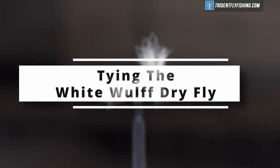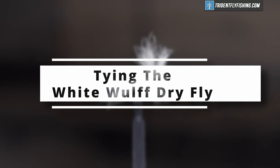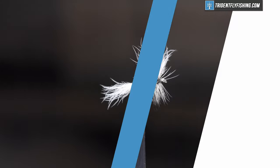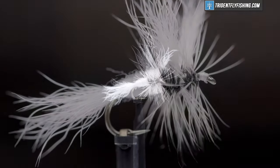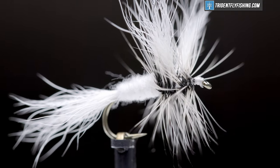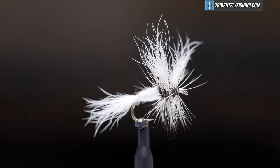Hello, I'm Carlit Trident, fly fishing. Today we're going to tie the White Wolf. This fly was designed by the legendary Lee Wolf in the 1930s. It's a great fast water fly that floats high and easily supports the dropper. It's usually tied in sizes 10 through 16.